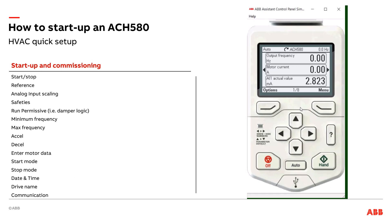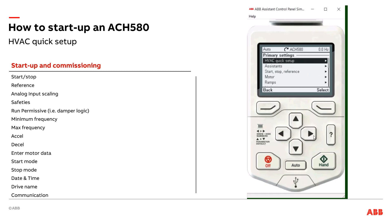First thing we're going to do is go ahead and click on Menu, go into the Primary Settings, first on the list here — either select or the right arrow, your choice — and top on the list is the HVAC Quick Setup right up here. So what is the HVAC Quick Setup?